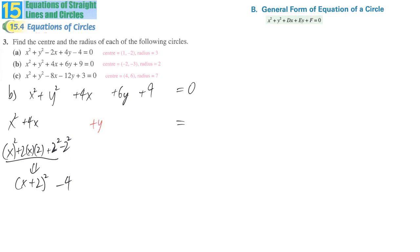For the y term part, y squared plus 6y, so it is y squared plus 2 something something. 2 times something gives you 6, so you know it is 3, and it comes from 6 divided by 2, it gives you 3.